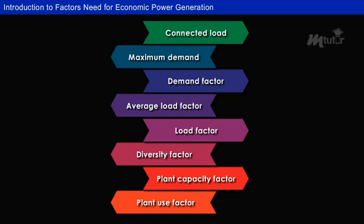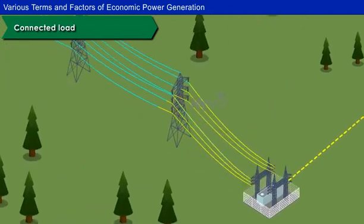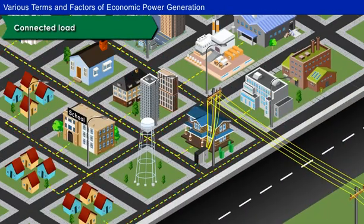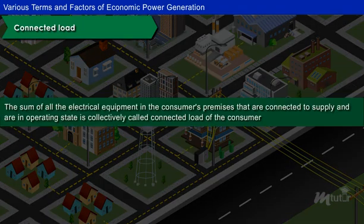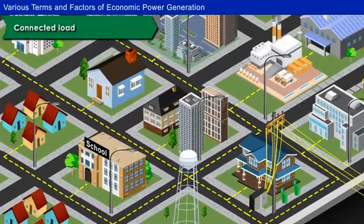In order to do that, it is necessary to consider the important terms and factors related to economic power generation to meet the existing and future power demand. Let us discuss about these factors in detail. Let us first begin with Connected Load. A power plant supplies load to thousands of consumers. Each consumer has certain equipment installed in its premises.